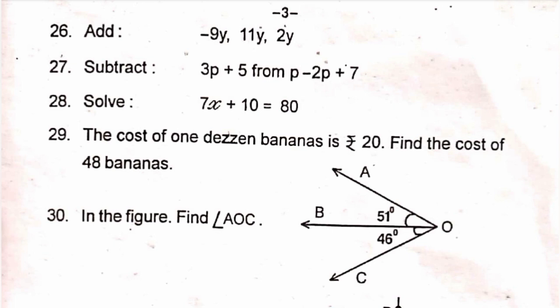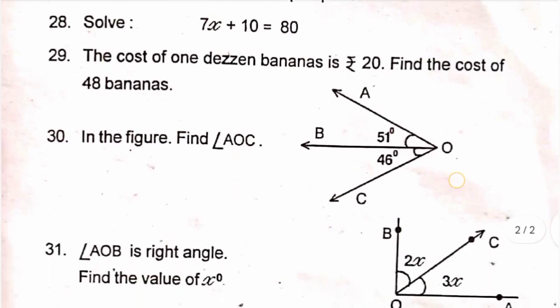Question 28: solve 7x plus 10 equals 80. Question 29: the cost of 1 dozen bananas is rupees 620 — find the cost of 48 bananas. Note that 1 dozen equals 12 bananas, so find the cost of 48 bananas. Question 30: in the figure, find angle AOC. Question 31: angle AOB is a right angle — find the value of x degrees.